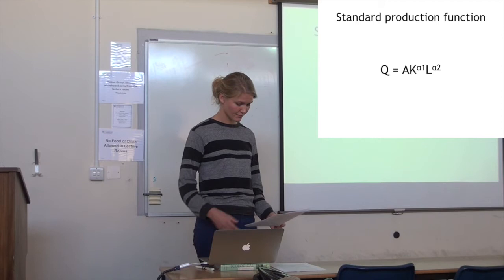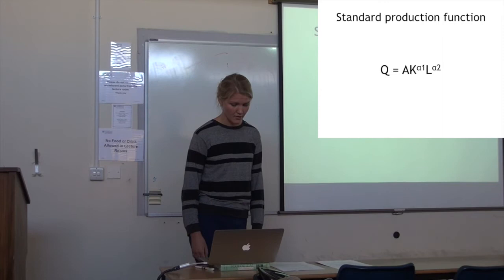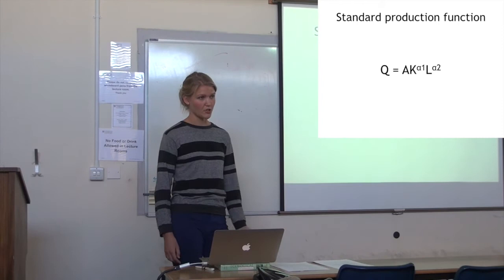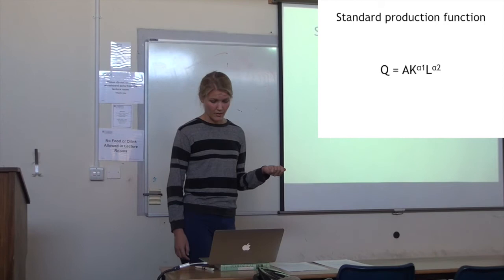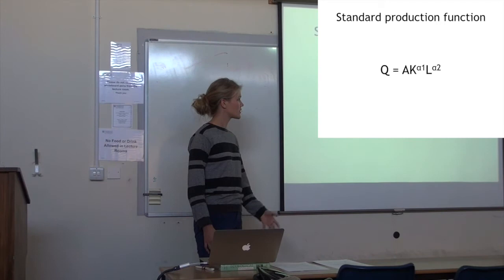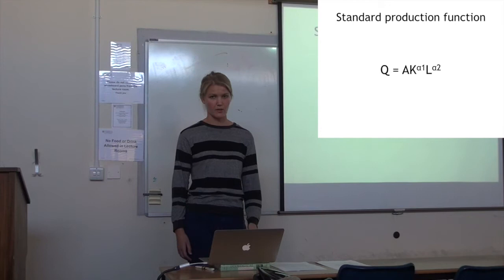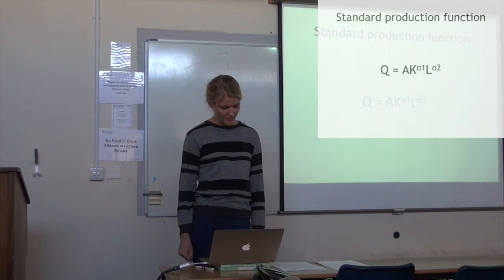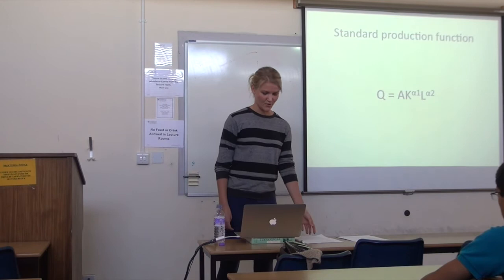The problem with this function is that there is no environment — natural resources are not included. We basically have a factor telling us how efficient the technology is, and then we have capital and labor inputs. Mathematically, what this function tells us is that the economy can get along without using any resources. According to Herman Daly, a well-known ecological economist, he said this would be the same as baking a cake with only a cook and a kitchen, but with no ingredients and no energy, which obviously is impossible.